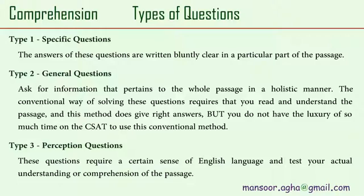The second type of questions are general questions — about 5 to 20 percent of questions. General questions ask for information that pertains to the whole passage in a holistic manner. The conventional way of solving them requires reading and understanding the whole passage, which does give right answers, but you do not have the luxury of so much time on the CSAT. That's why we learned critical mapping in class to handle this seemingly difficult question type. The third type are perception questions — also about 5 to 20 percent. These require a certain sense of the English language and are the only ones to test your actual understanding or comprehension of a bigger chunk of the passage.